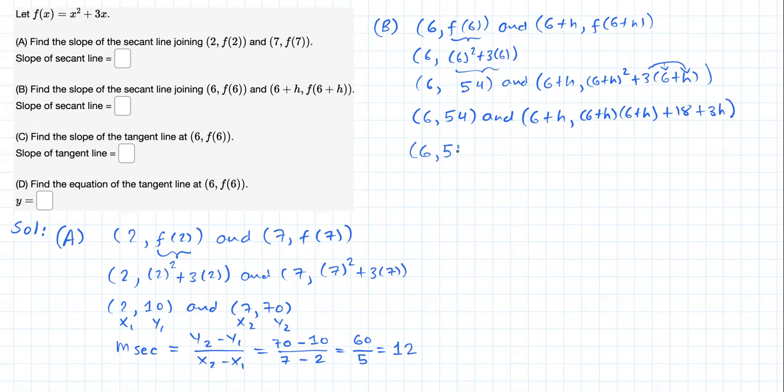So now (6, 54) and (6+h, let's FOIL this out: 36 here, 6h here, 6h again, h×h = h², plus 18 plus 3h. Simplifying, combining like terms, we should get the following: 36+18 = 54, 6h+6h = 12h, plus 3h = 15h, plus h². So this is the coordinates of the second point in general.